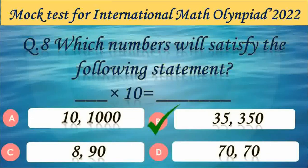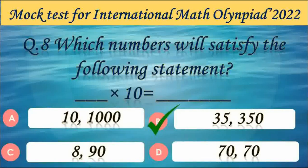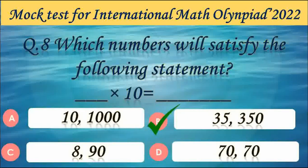Question number 8. Which numbers will satisfy the following statement? Options are shown on screen. Answer — Option B: 35 and 350. When we multiply 35 by 10, we get 350. So option B is correct.